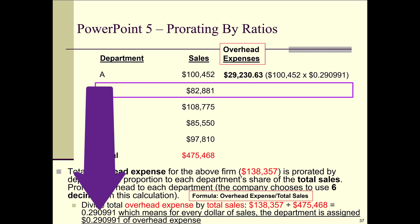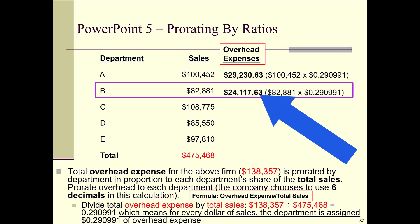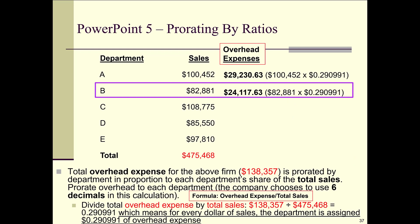For department B, take its sales of $82,881, multiply by 0.290991, and you get $24,117.63 of overhead expenses. We're going to do the same thing with departments C, D, and E.